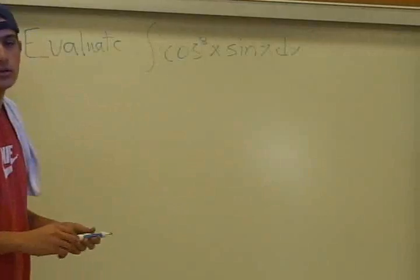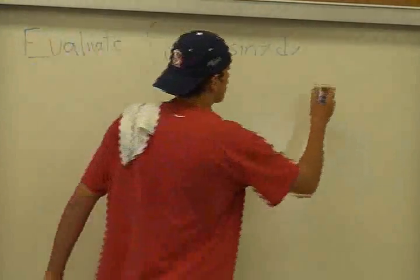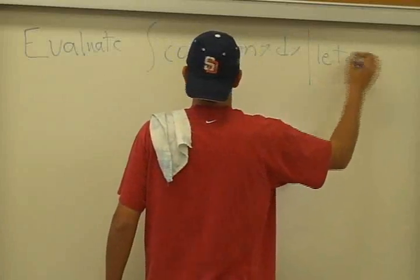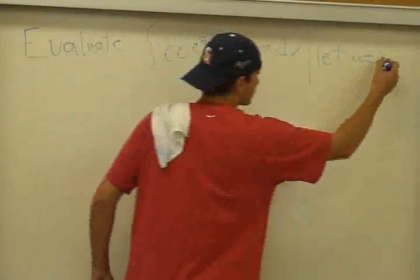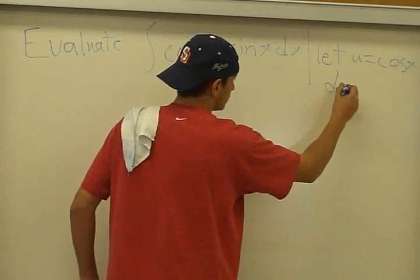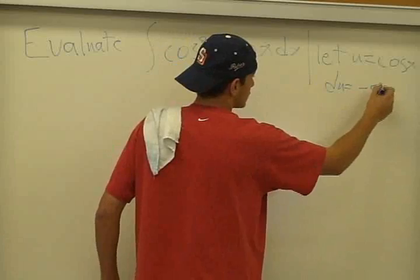So the first move we need to do is substitute a term for u. So we're going to let u equal cosine of x. So when we take the derivative of u, it would equal negative sine of x.